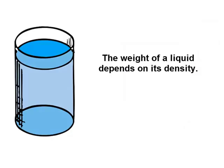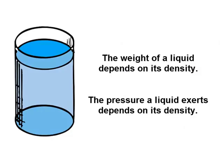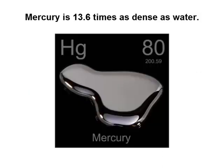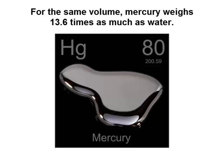How much a liquid weighs, and therefore how much pressure it exerts, depends on its density. For the same depth, a denser liquid exerts more pressure. Mercury is 13.6 times as dense as water. For the same volume of liquid, the weight of mercury is 13.6 times the weight of water, and the pressure of mercury on the bottom is 13.6 times the pressure of water.